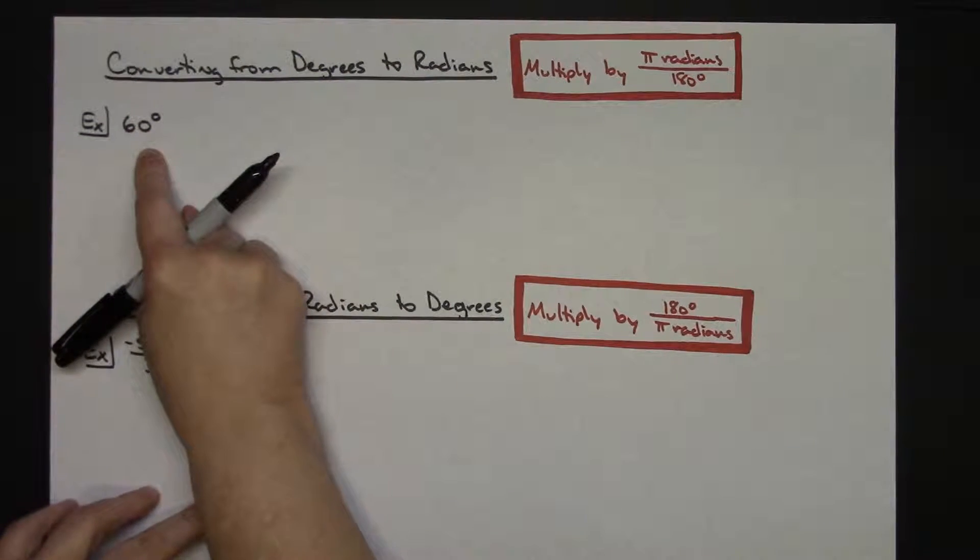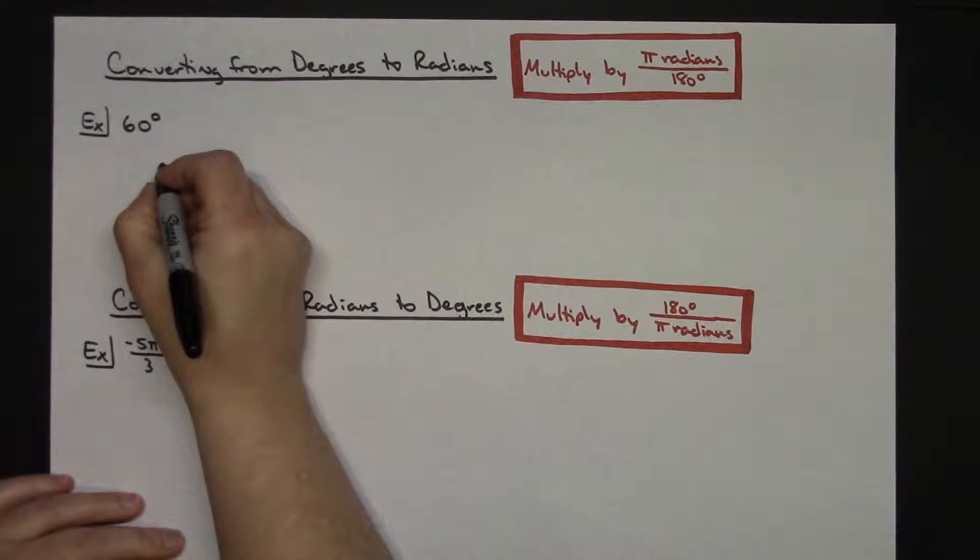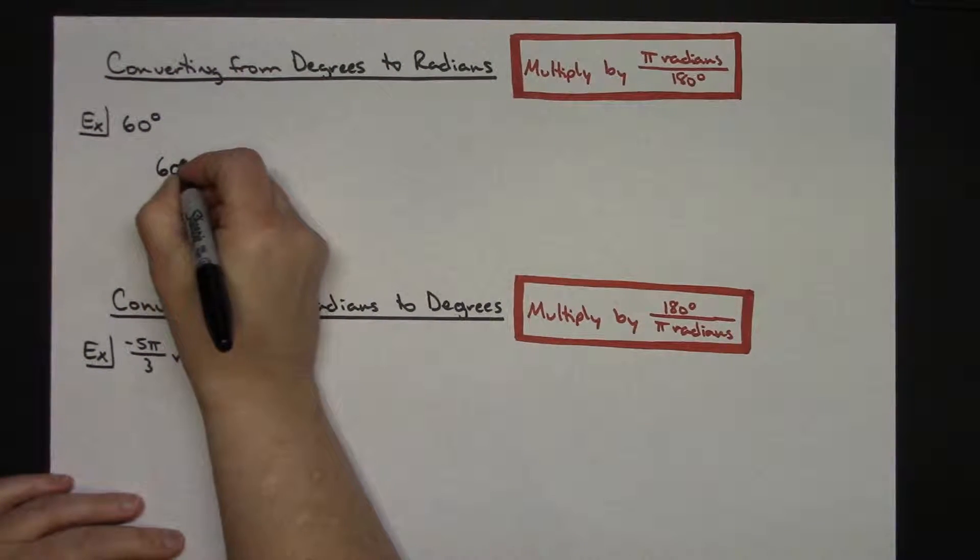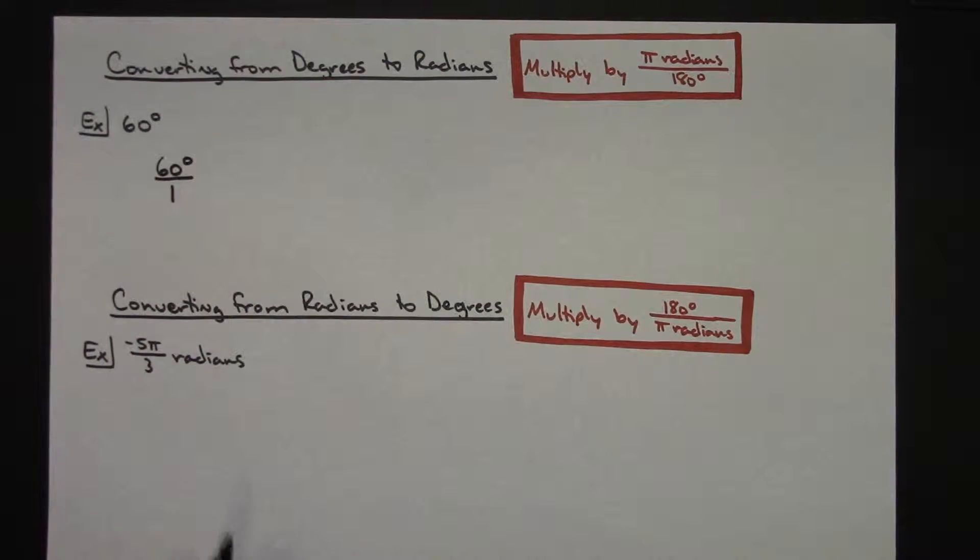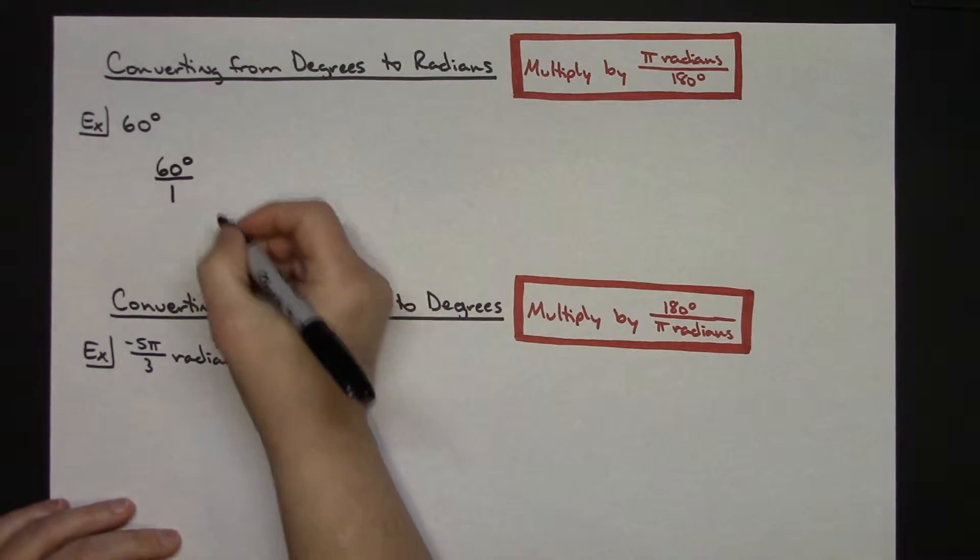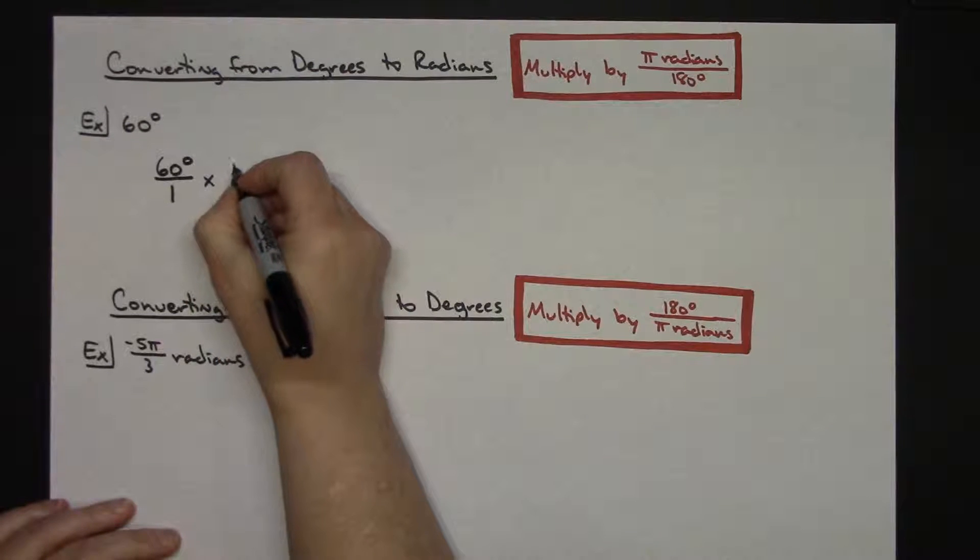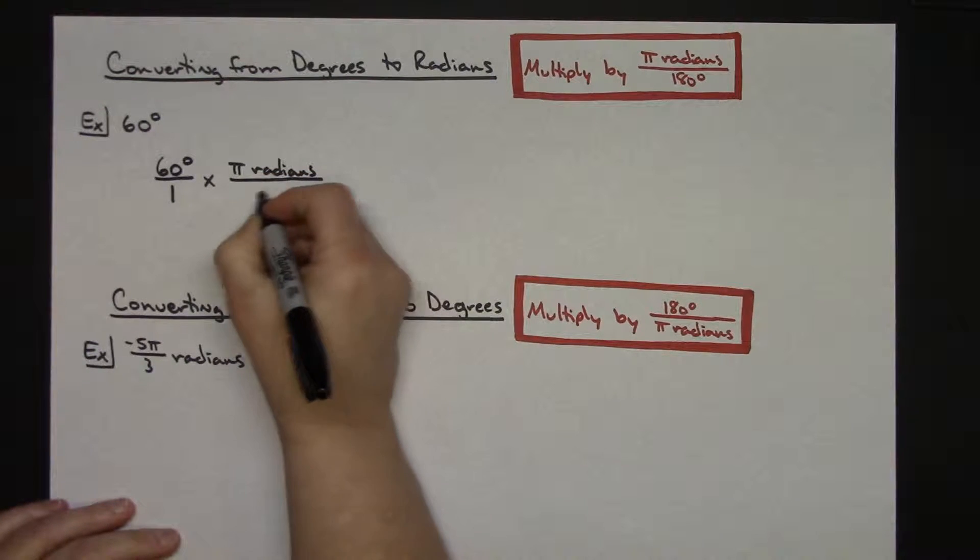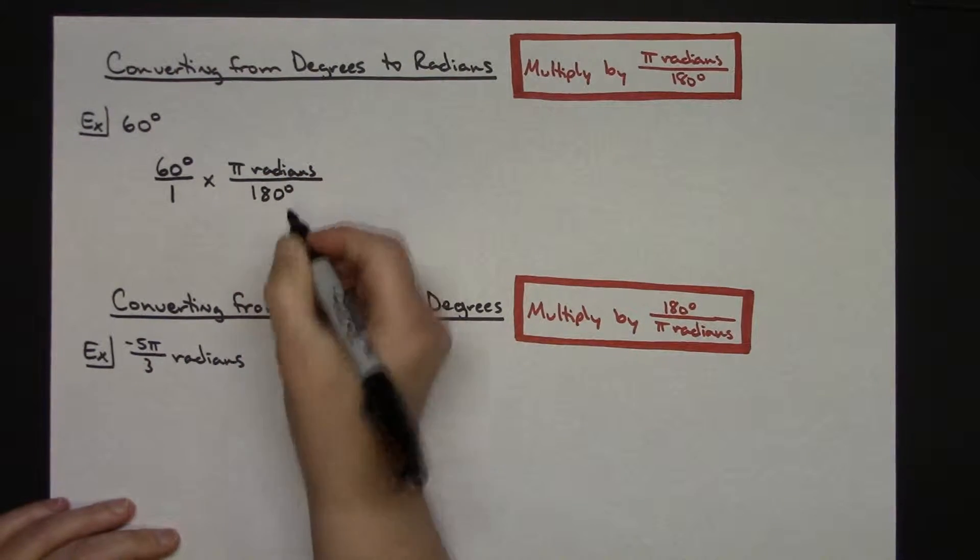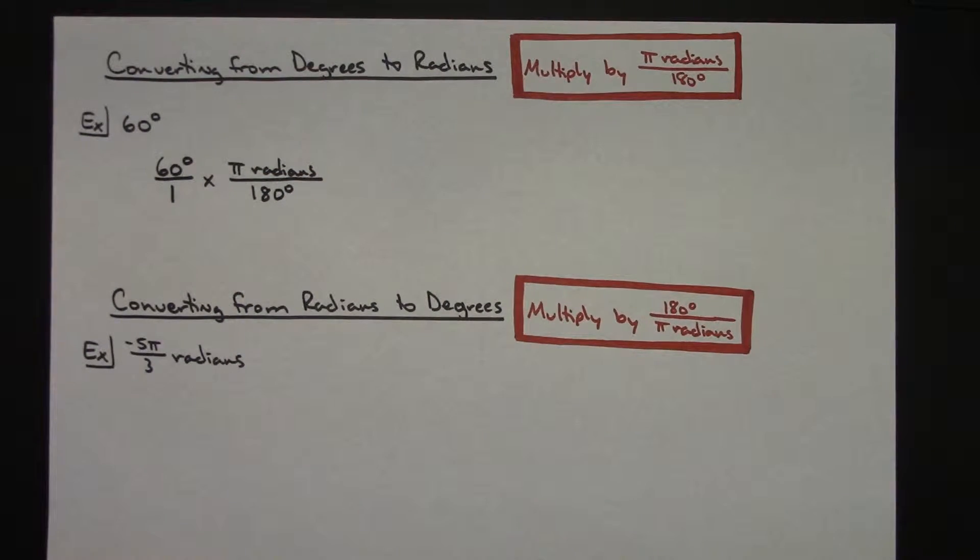For 60 degrees what I want to do is I'm going to write it as a fraction. I'm going to go 60 degrees over 1. That puts my degrees in the numerator there. Now if I multiply by π radians over that 180 degrees, what this does is it sets it up really nice for a unit analysis.